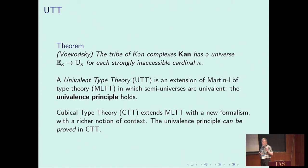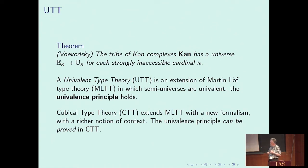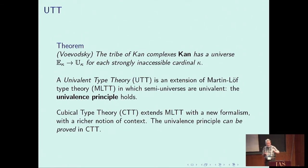One can add univalence as an axiom to Martin-Löf type theory, but a better approach is cubical type theory, where the univalence principle can be proved — not just assumed. Cubical type theory also has normalization: every term has a normal form. If you just add univalence as an axiom to Martin-Löf type theory you lose normalization, but in cubical type theory there is a new normalization procedure.